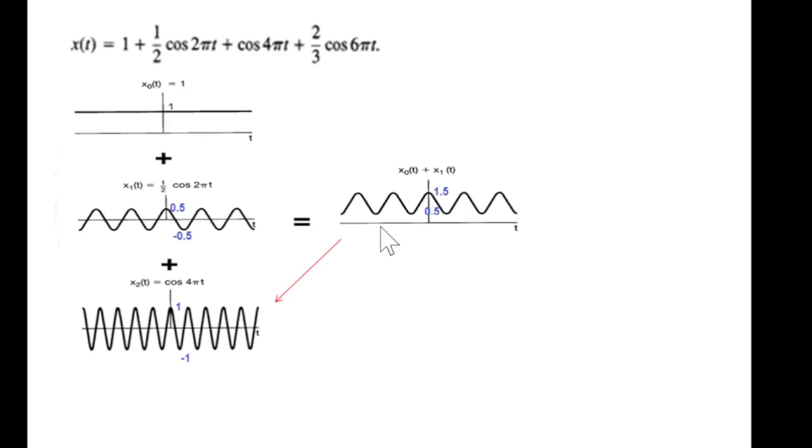Then with that we will add the second signal, that is cos 4πt. Now remember this is 2π and this is 4π, that means the frequency will be double of this one. That is shown here, double. In that duration we'll have two cycles of the signal.